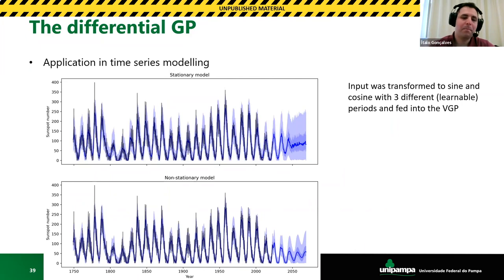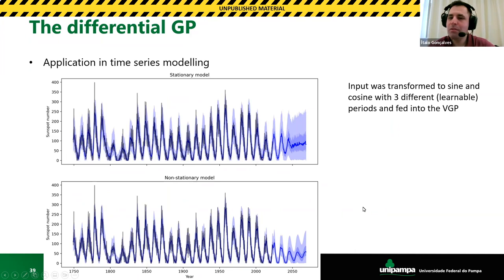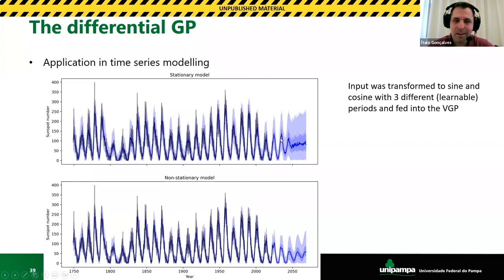For time series modeling, we use the solar cycle dataset — counting sunspots over time. We do feature engineering by computing sines and cosines from the timeline and using those as inputs to the GP. The stationary GP doesn't learn the periodic pattern well and doesn't extrapolate far from the data. The non-stationary model with the differential GP propagates the pattern better, capturing the steep rise and slow fall of each solar cycle and propagating this pattern for a longer period of time.